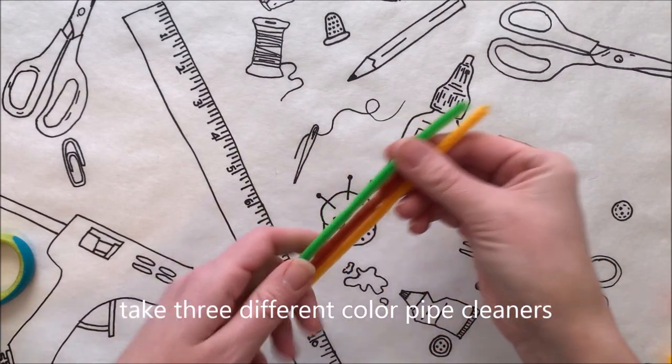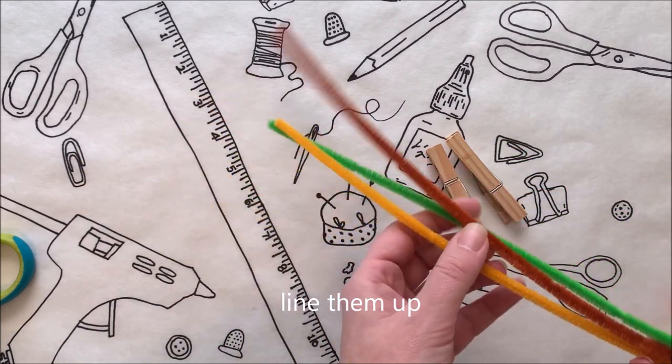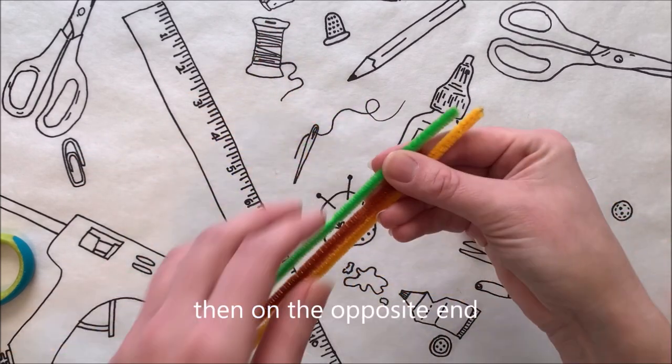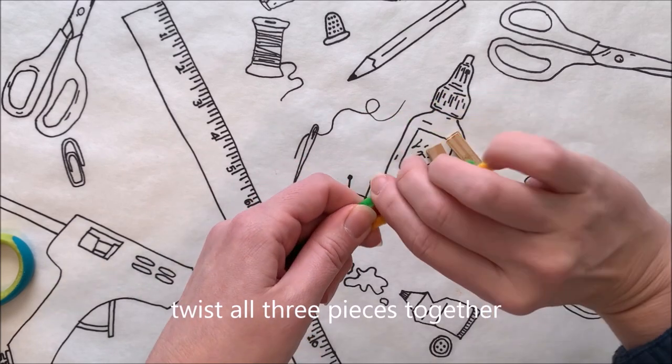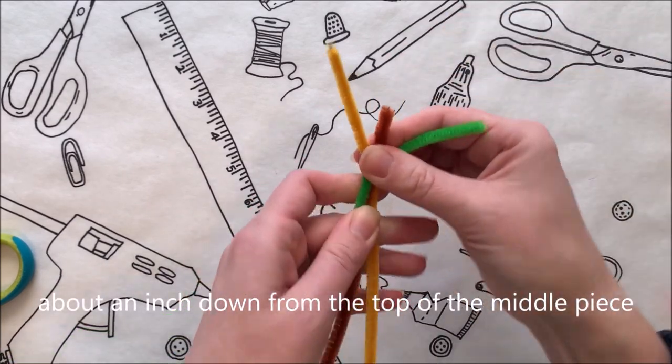For our garden snail, take three different color pipe cleaners, line them up, and then pull the middle piece back about an inch. Then on the opposite end, twist all three pieces together about an inch down from the top of the middle piece.